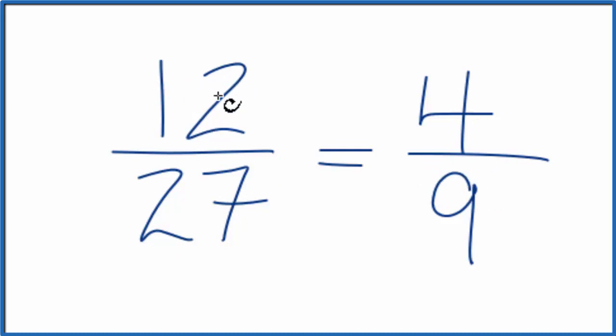If you divide the number 12 by 27 and then divide 4 by 9, you would get the exact same answer. These are equivalent fractions. We've just reduced 12/27 down to its lowest form. This is Dr. B. Thanks for watching.